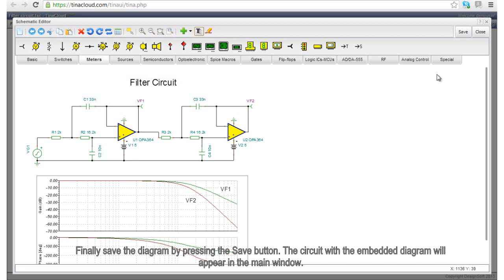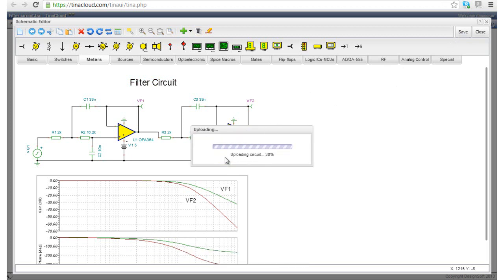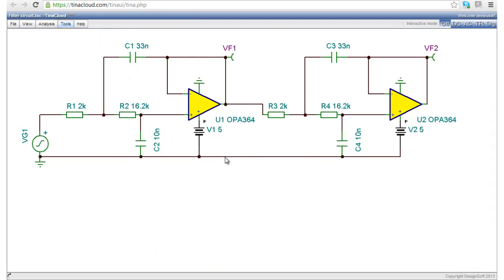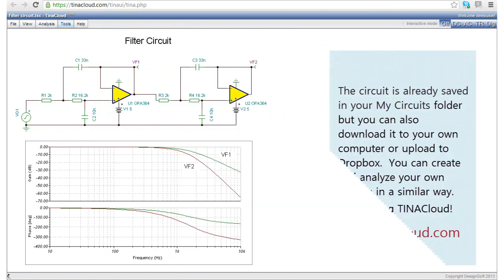Finally, save the diagram by pressing the Save button. The circuit with the embedded diagram will appear in the main window. The circuit is already saved in your My Circuits folder, but you can also download it to your own computer or upload to Dropbox. You can create and analyze your own circuits in a similar way. Enjoy using TINA Cloud, www.tinacloud.com.